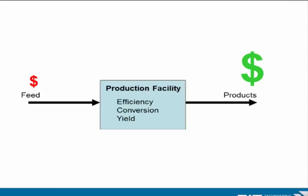You also want a good yield — when we talk about conversions and yield, the yield tells you how much of the feed actually ends up as products. If your yield is very good, you won't make too many byproducts. If your yield is bad, you will also make a lot of other material — possibly nasty byproducts — that you need to spend money to handle.